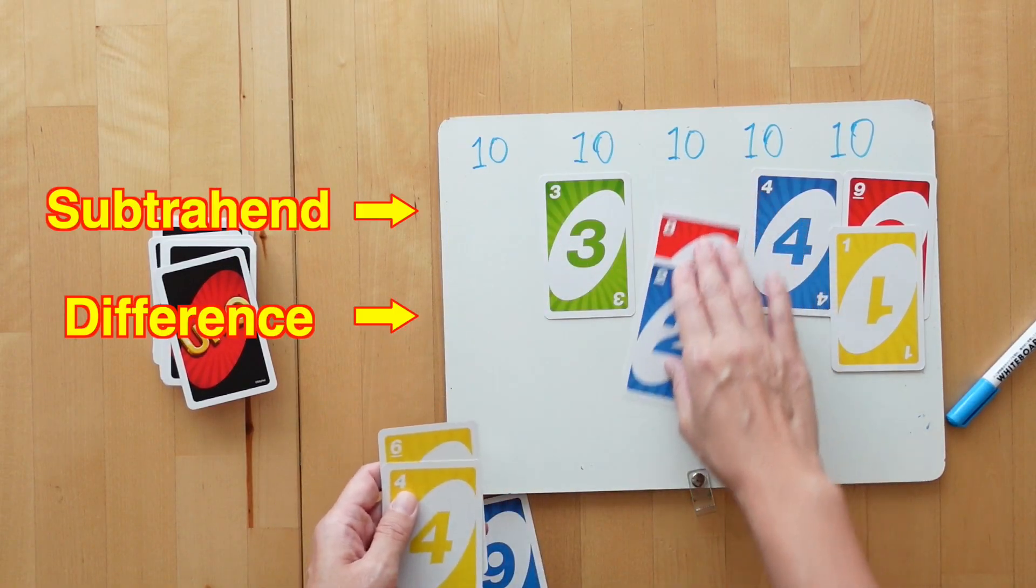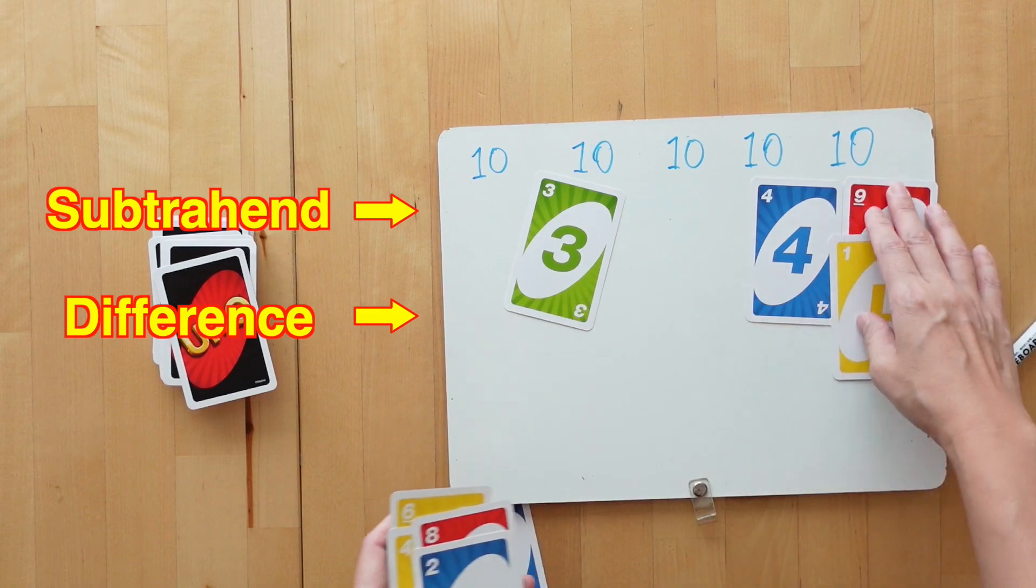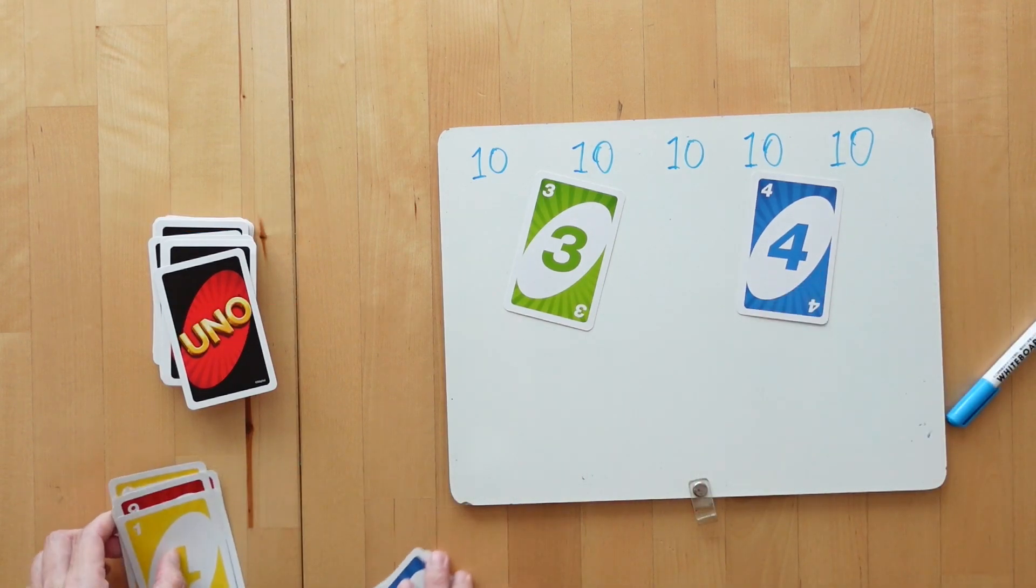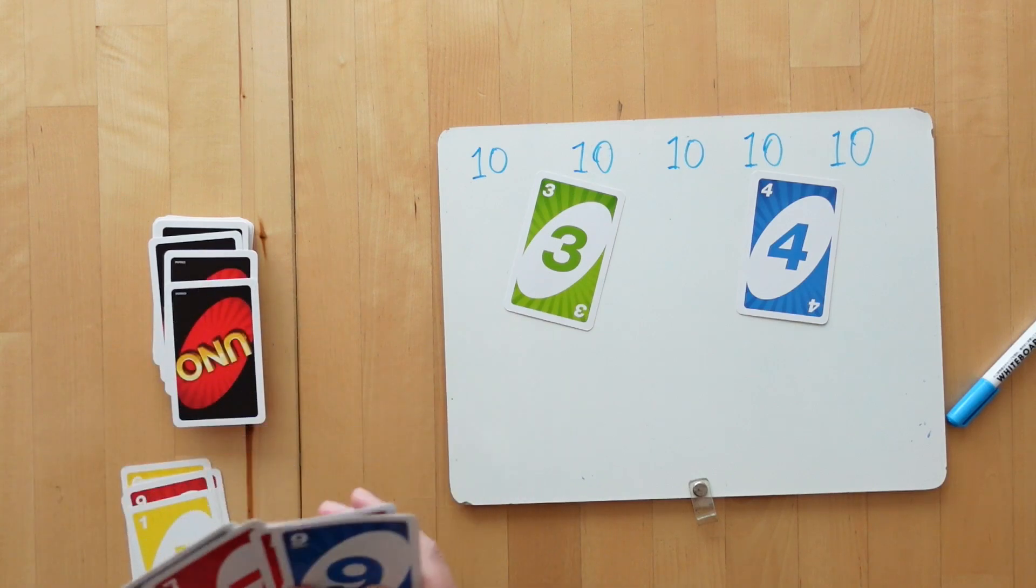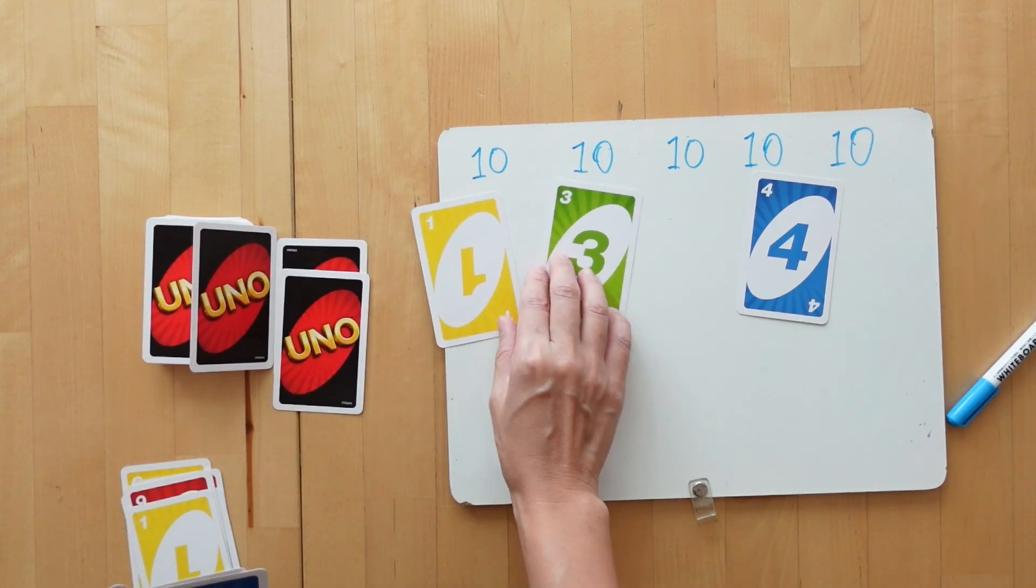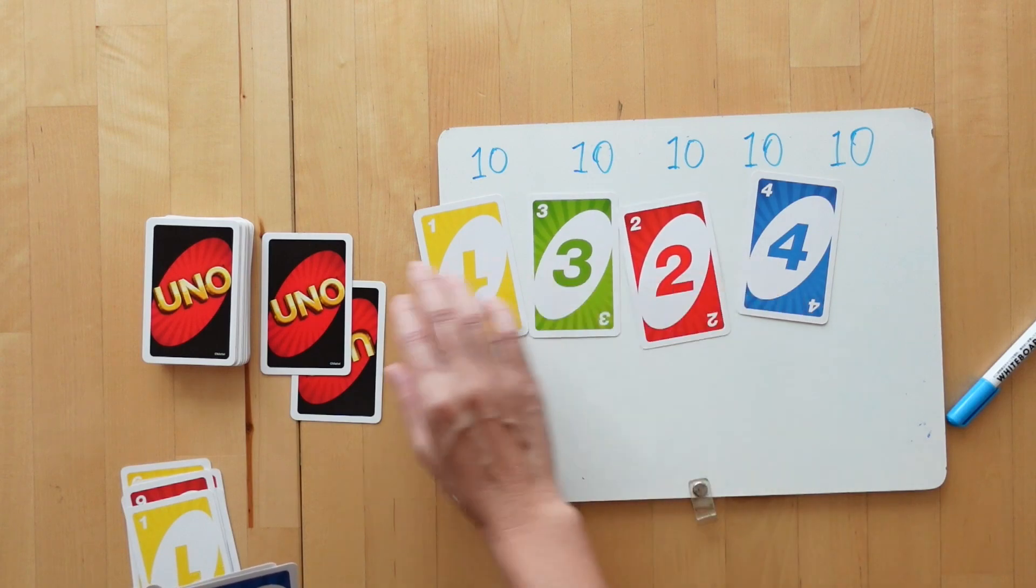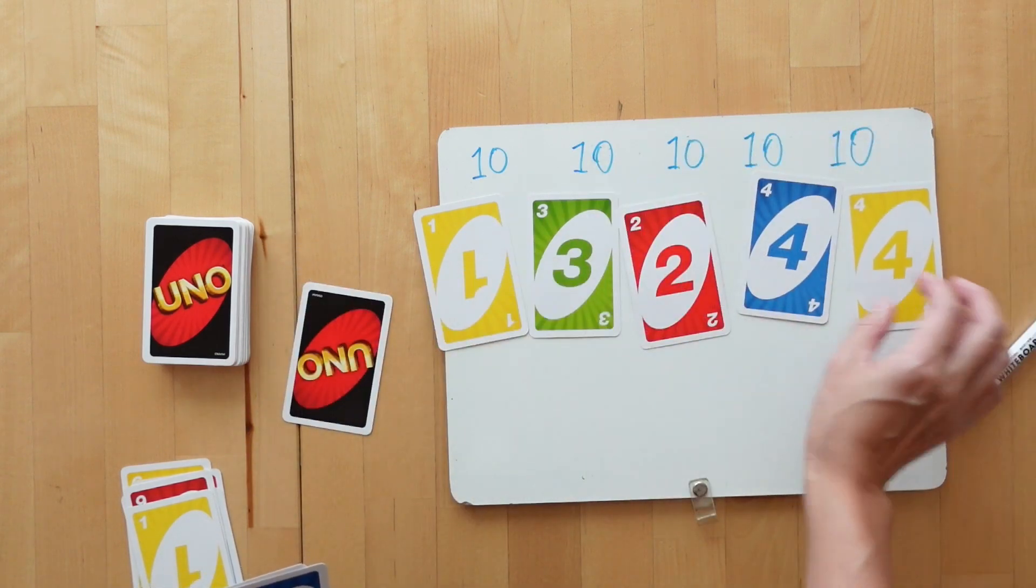And that is the end of my turn. I'll collect both the subtraction and the differences which make a pair. I'll fill my hand back up to 4 and replace any missing subtraction that I took. And then it is the next player's turn to do the same.